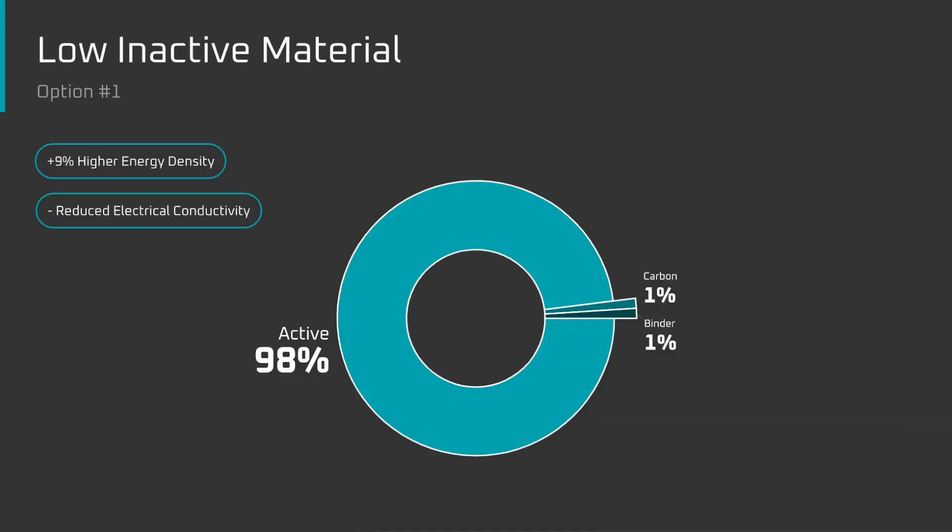The first is to change the ratio of active to inactive materials. A wet slurry electrode is typically 90% cathode active material, 5% binder, and 5% cathode carbon. With DBE, that can be improved to 98% active material, 1% binder, and 1% carbon powder. This would result in an electrode that's more strongly bonded than a wet slurry electrode, but has around 9% greater energy density.